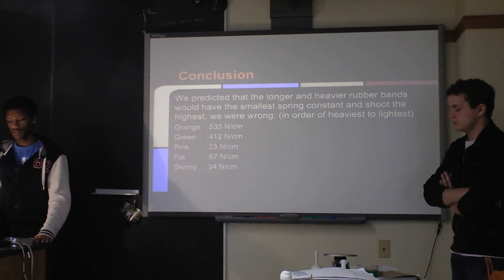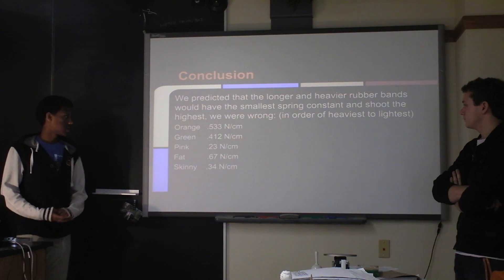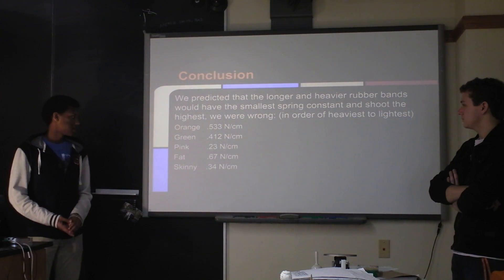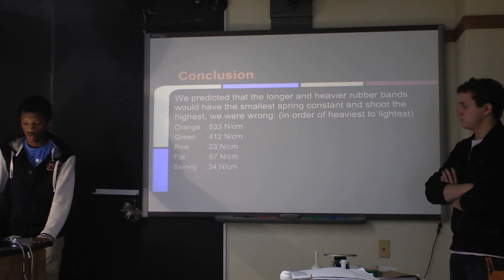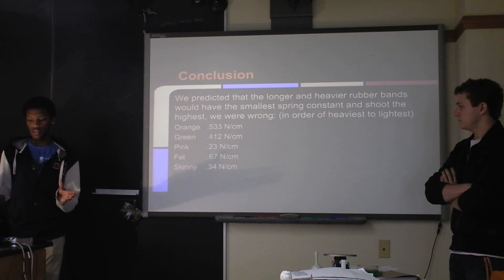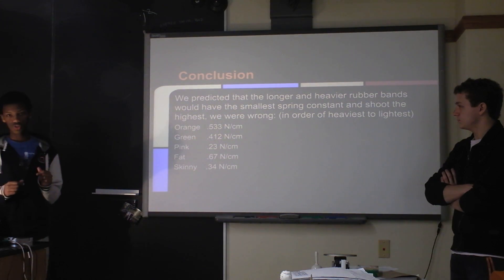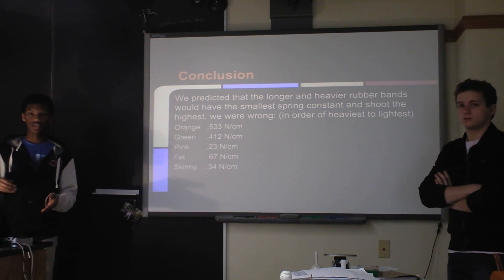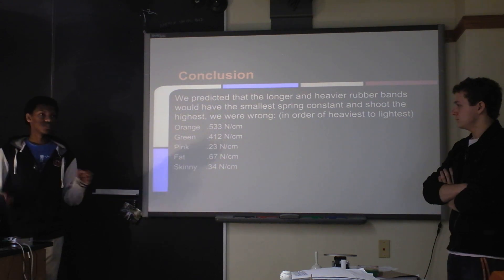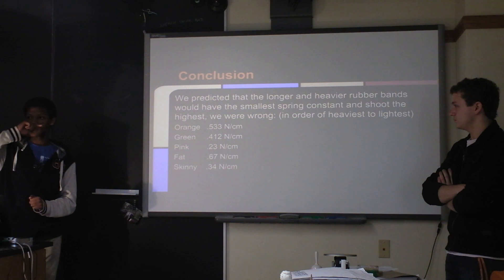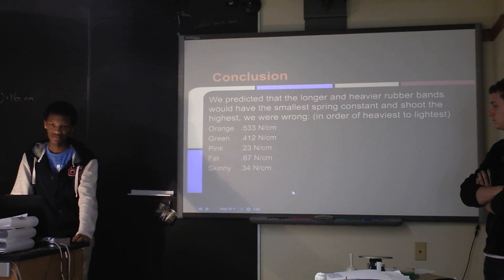We predicted that the longer and heavier rubber bands would have the smallest spring constants and shoot the highest, but we were wrong. This is in order of heaviest to lightest. The pink one had the smallest spring constant and the orange one had the highest. We can guess that it was because the skinny one and the pink one were so thin that there was less area getting affected by air resistance. And for the green one, it was so long that the distances we stretched it had very little effect compared to the force.